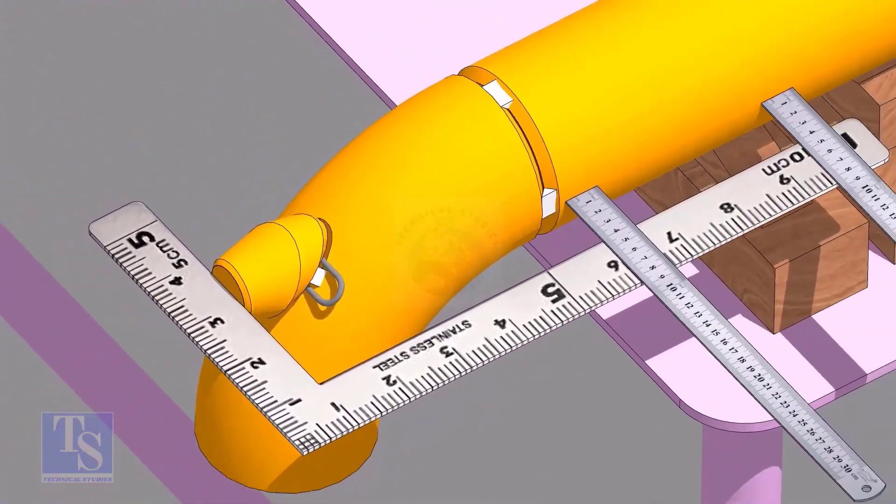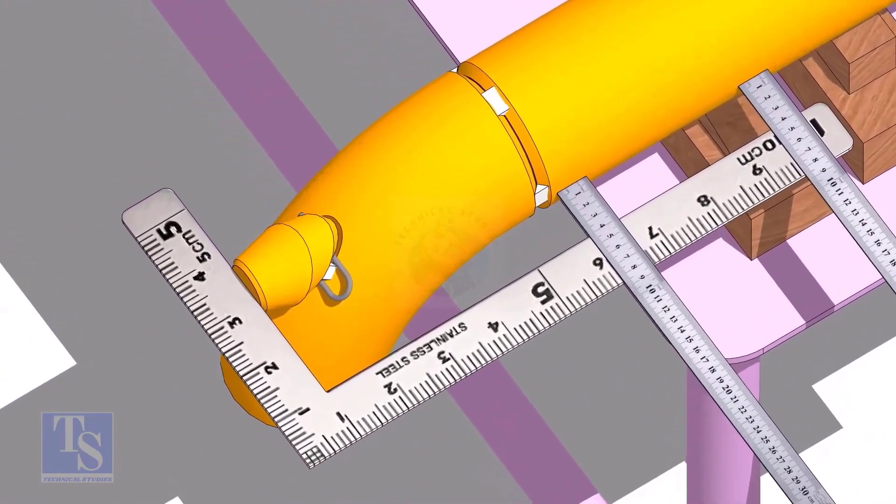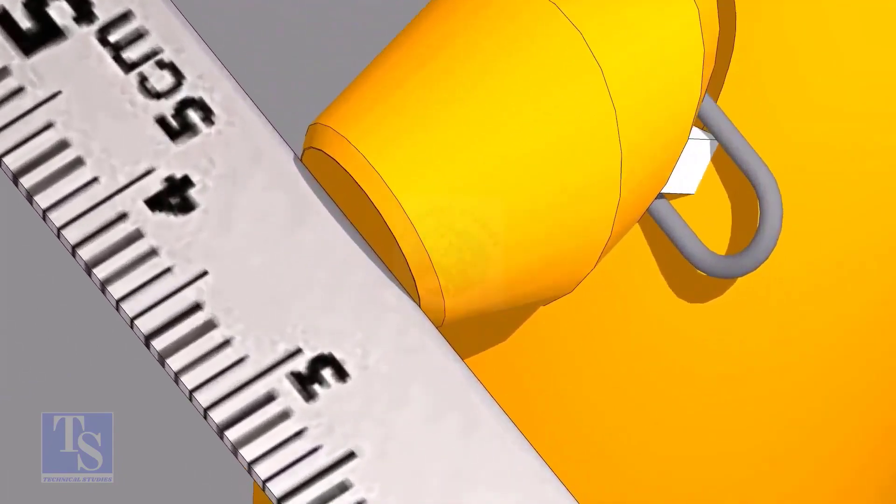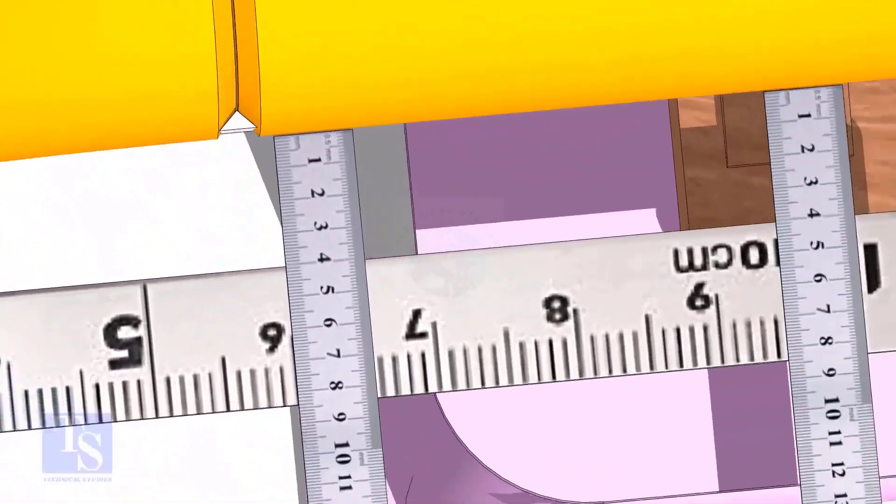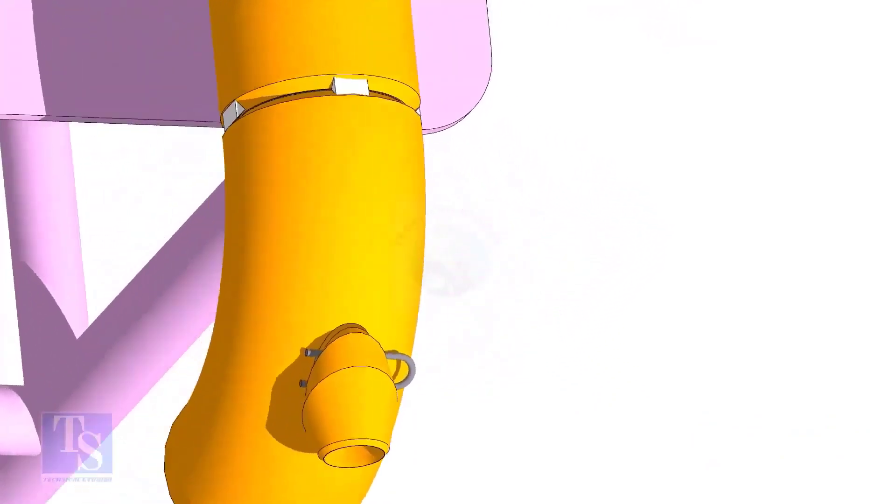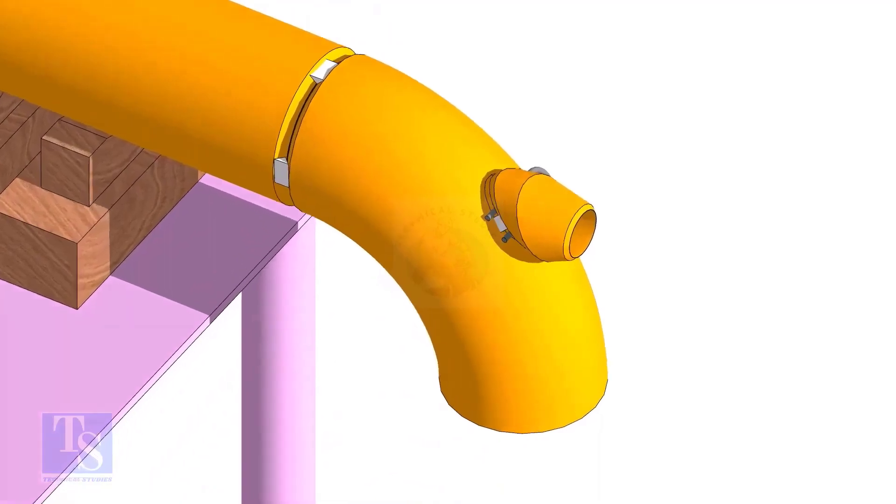Make the elbowlet face square to the side of the pipe. Tack weld on the opposite side.